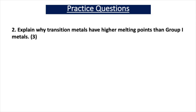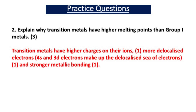Now have a go at our second practice question. This question asks you to explain why transition metals have higher melting points than group one metals, and it is a three-mark question. To answer, you need to say that transition metals have higher charges on their ions — one mark — and therefore more delocalized electrons, since the 4s and 3d electrons make up the delocalized sea of electrons — one mark — and therefore as a result there is stronger metallic bonding — one mark. That gives you all three marks.